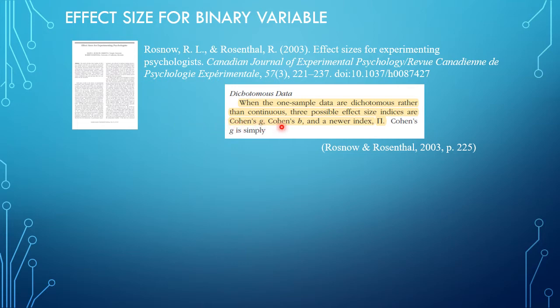If you look online, there's also a so-called alternative ratio. Cohen's G—I have a separate video on that—is simply the difference with 0.5, so the percentage minus 0.5.